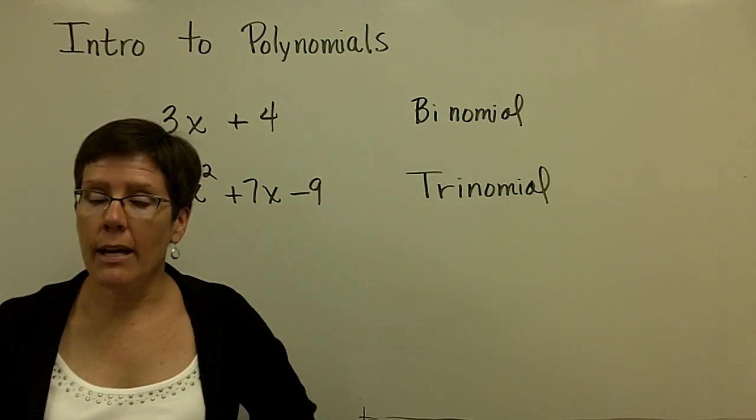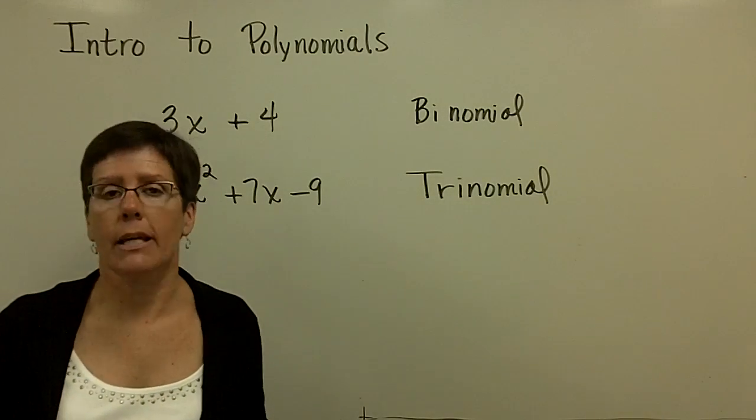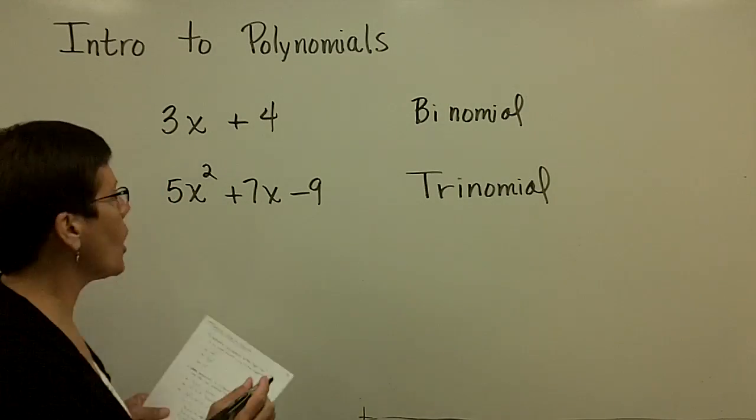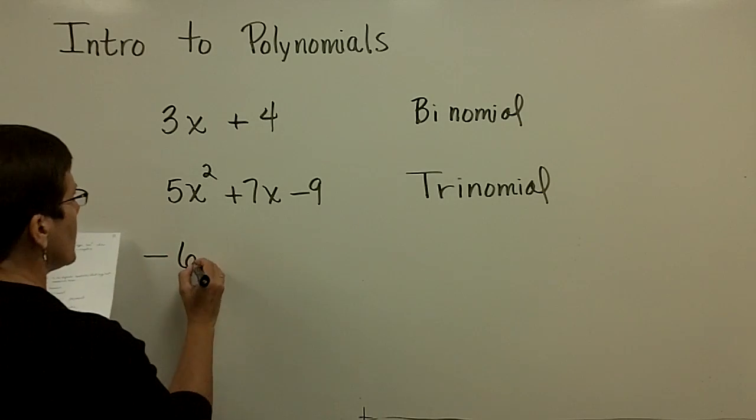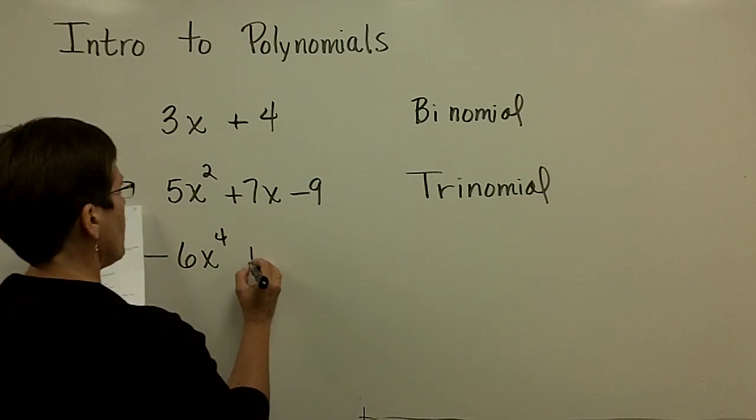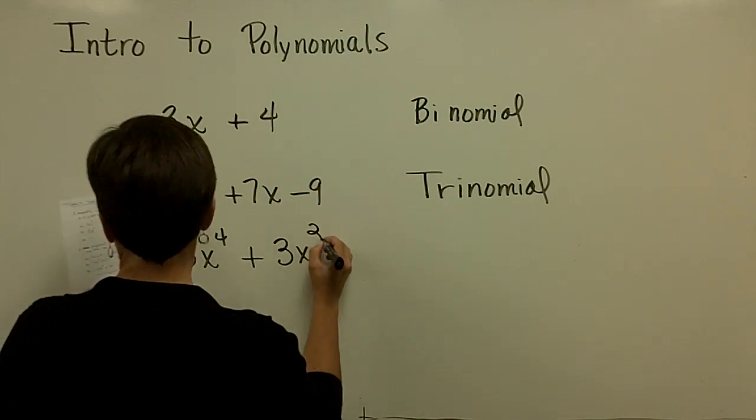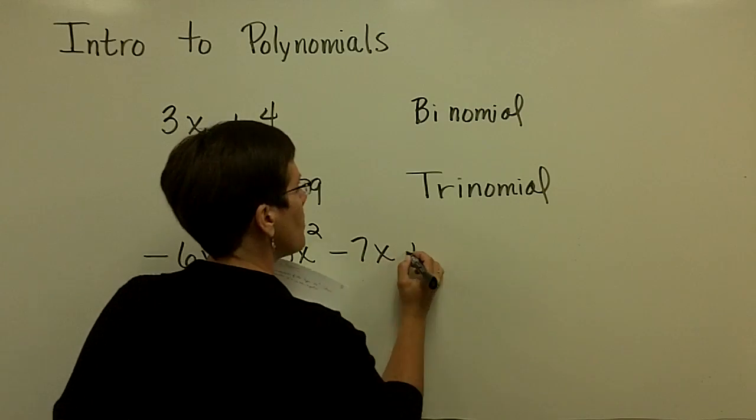And after that, if there's more than three, we'll call it a polynomial. And actually for any of these, they're called polynomials. An example of that might be -6x⁴ + 3x² - 7x + 11.